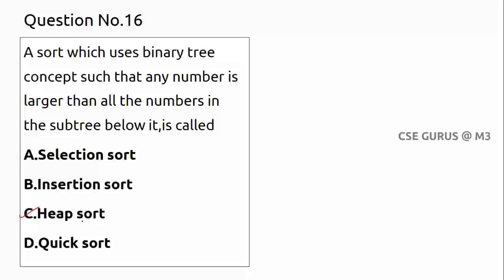Heap sort follows a tree-like structure where each element has to be inserted. There are two types of binary heap: max heap and min heap. In max heap, for every node, all descendant values will be less than the node. For min heap, all descendants are greater than the node.